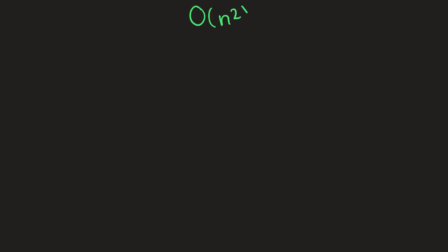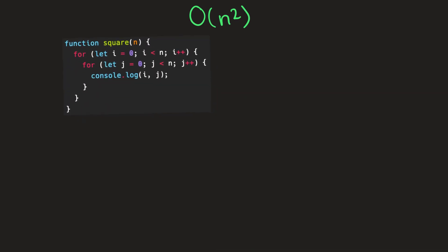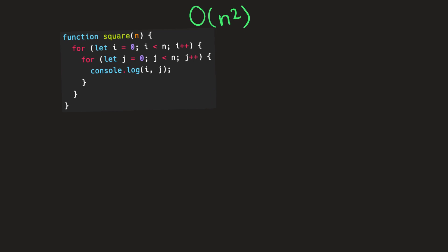To understand O(n²), we're going to need to take a function into consideration, and the function will look something like this. What this function is doing is it's going to take in a number n and it's going to iterate through a for loop starting with the number zero all the way up until the number n.